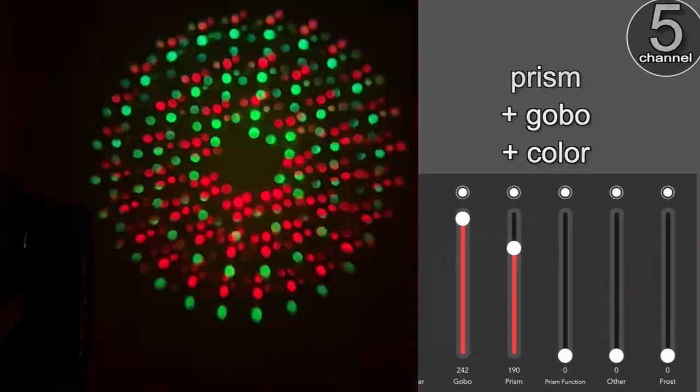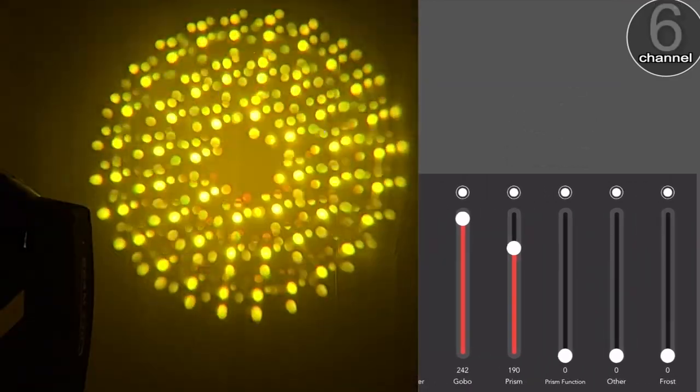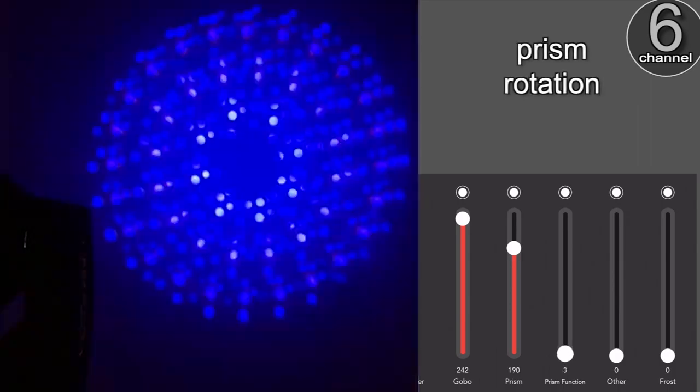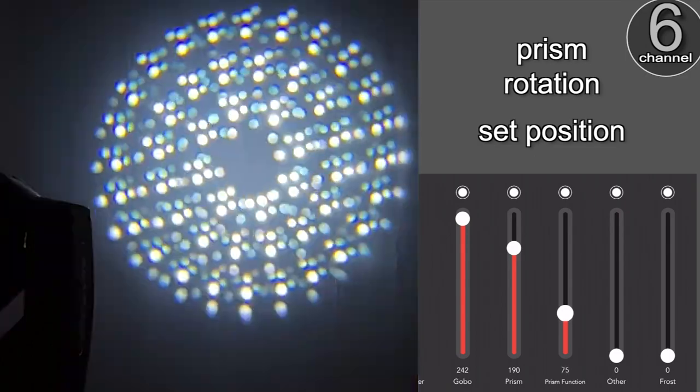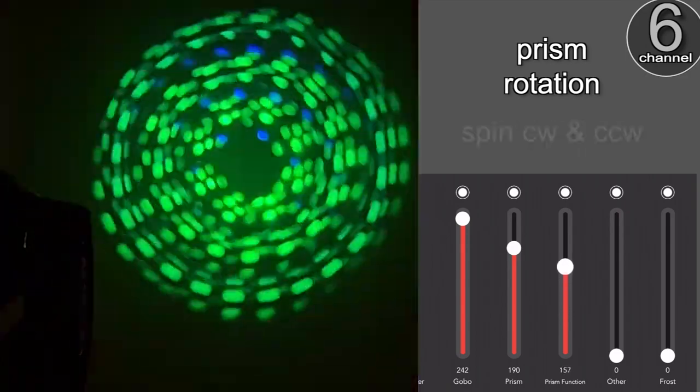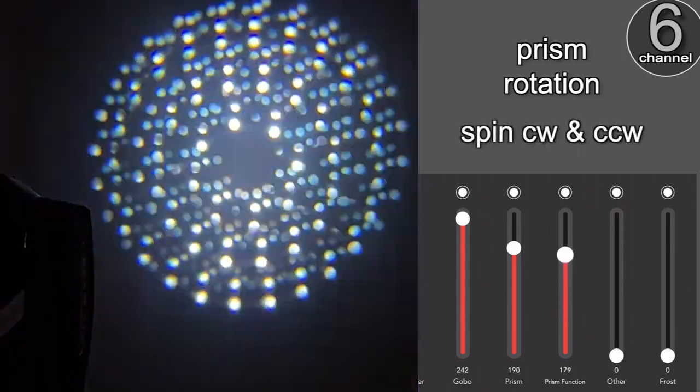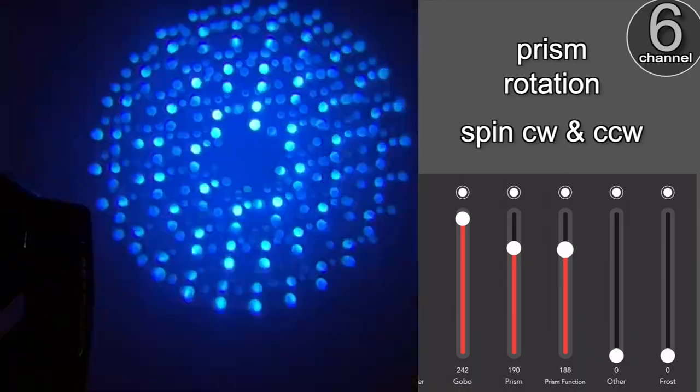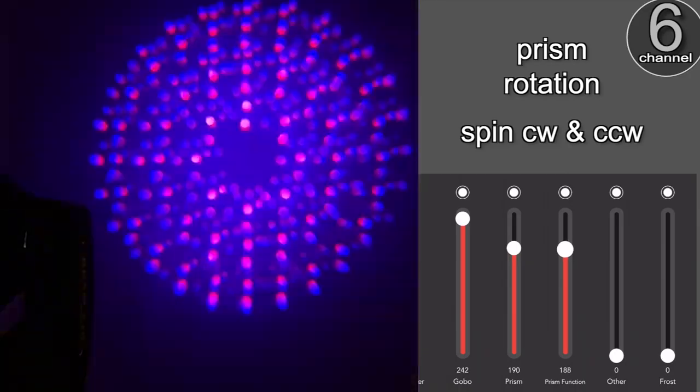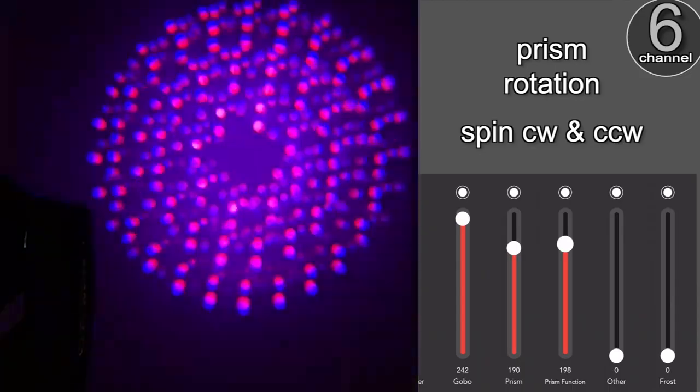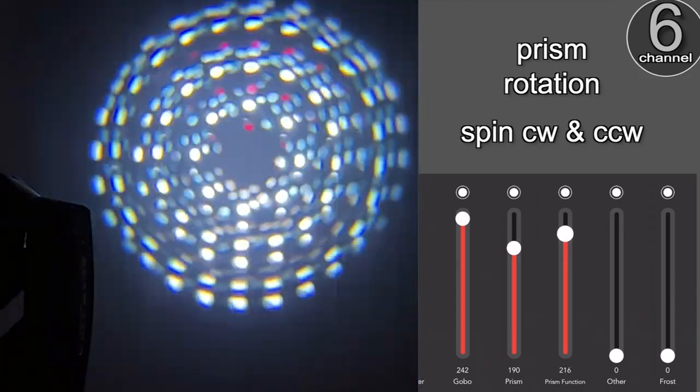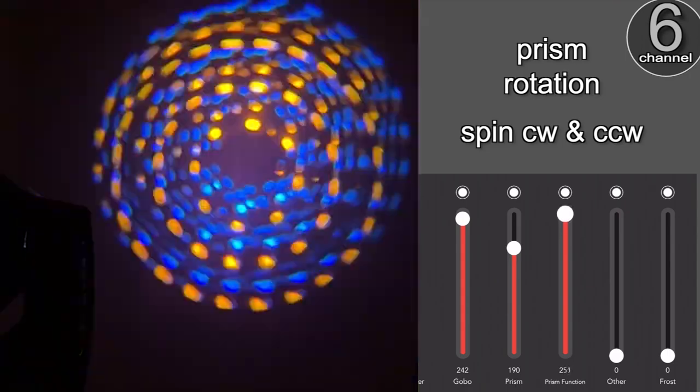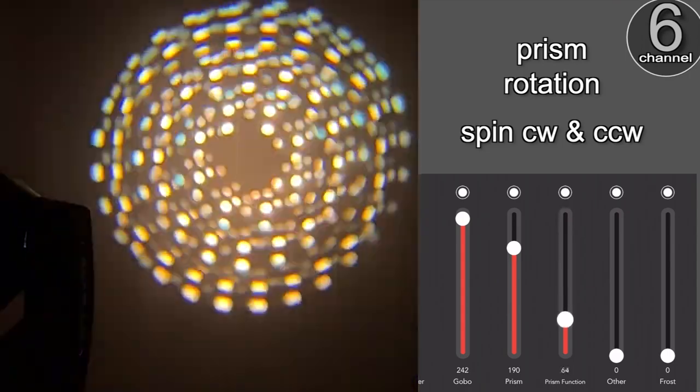When we go up to channel 6, you can rotate the prism. So you can rotate it to a set angle, or in the higher values, you can spin it quickly counter-clockwise. Then as you increase the values, spin it slowly, higher values still, it spins clockwise, slow to fast.